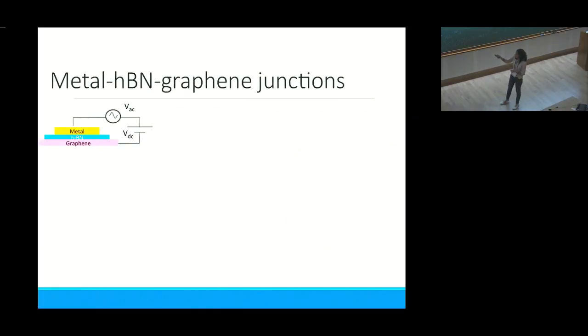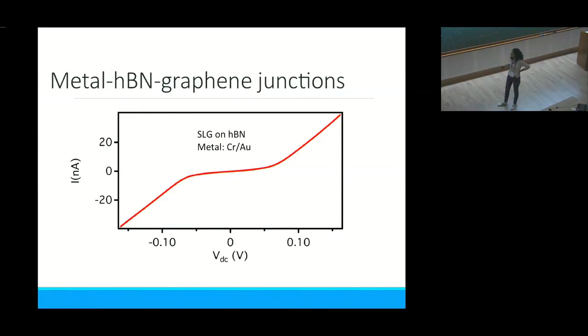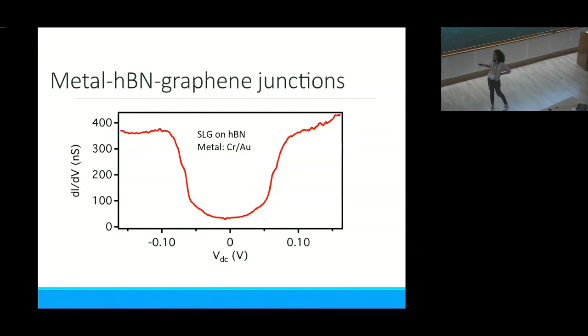We moved on to metal-graphene-boron nitride junctions where we replaced one metal electrode with graphene. In this case, the current-voltage characteristics doesn't look linear, it has a feature. This is single layer graphene on a boron nitride substrate. Boron nitride can be used as a substrate instead of silicon oxide and gives better quality devices. Looking at dI/dV, which is basically conductance, we find suppressed tunneling at low biases and suddenly this tunneling starts to increase. You have a bucket-like profile in your dI/dV characteristics.